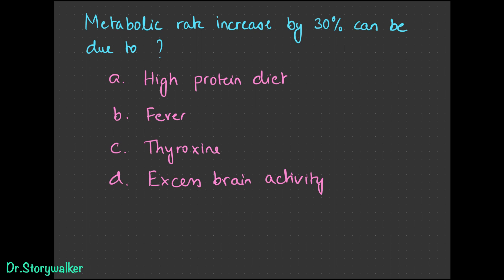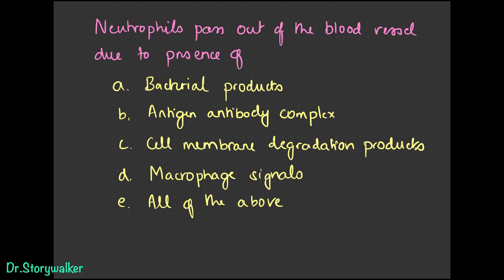We all want a high metabolic rate — a 30 percent increase can be achieved by a high protein diet. Zombies don't put on weight. Every 10-degree rise in fever can raise metabolic rate by about 100 percent; thyroxine injection raises it 50 to 100 percent; excess brain activity raises it more than 100 percent. What motivates a neutrophil to accumulate? Bacterial products, antigen-antibody complexes, cell membrane degradation products, and macrophages — the answer is all of the above.